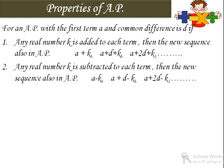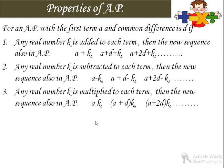मतलब आप कोई fixed number हर term में add कर दे तो भी आने वाला sequence जो होगा वो AP में होगा. अगर आप एक fixed number subtract करते हैं, तो भी आने वाला new sequence AP में होगा. In the same way, if any real number k is multiplied to each term, then the new sequence will also be in AP.